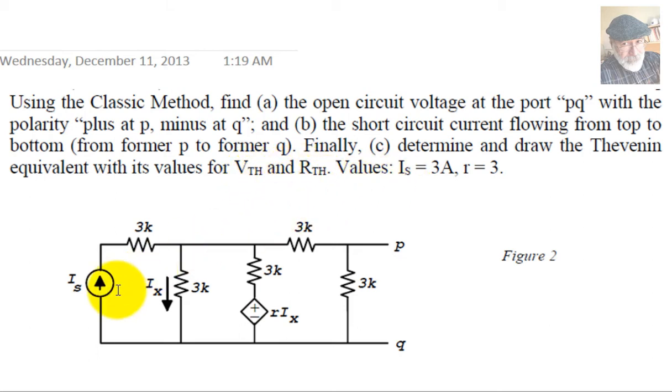The value of this current source IS is unusually large, 3A. And the value of this current resistance is 3 ohms. R is 3 ohms. Let's proceed.